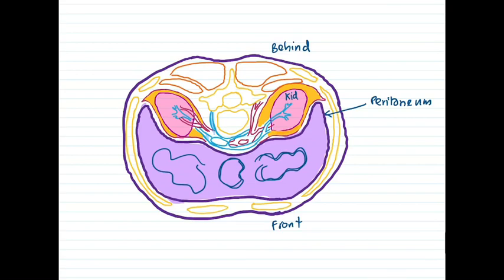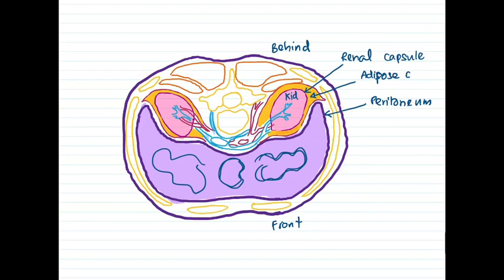The kidneys as retroperitoneal structures are protected by different structures outside of them. The first structure immediately outside is the renal capsule, which is made of connective tissue. After the renal capsule, there is a yellow section made of fat called the adipose capsule. The outermost layer is called the renal fascia, also made of connective tissue.